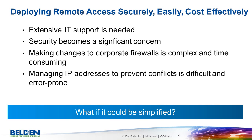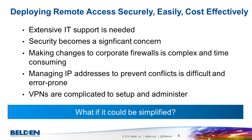But this often means that changes must be made to the firewalls. Remote access often leads to IP address conflicts. This is especially true if access is required to two networks which are using the same IP address range, which is common in industrial networks. Finally, to configure remote access using standard virtual private networks requires in-depth IT knowledge.